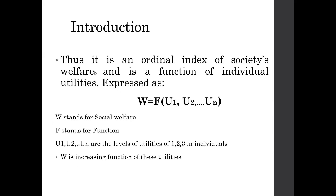The social welfare function is an ordinal index of society's welfare and it is a function of individual utilities, expressed as W = f(U1, U2, ... Un). Here W stands for social welfare, f stands for function, and U1, U2, ... Un are the levels of utilities of individuals one, two, three, and so on.